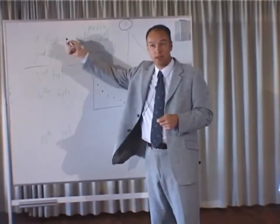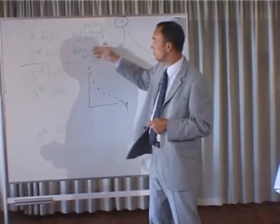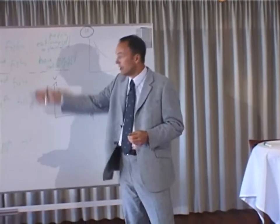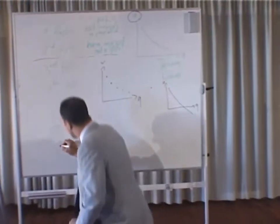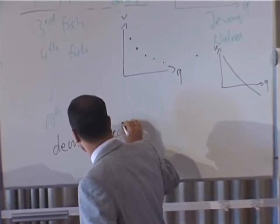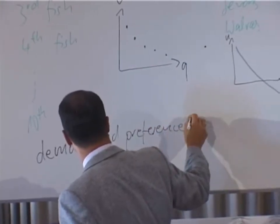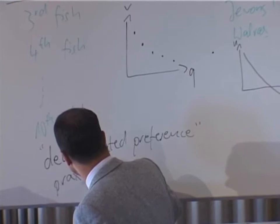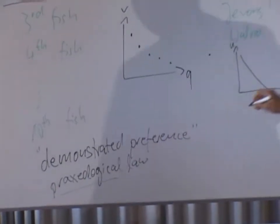The Austrian approach offers a praxeological account instead. Because goods can be subdivided into discrete units, every increase in quantity leads to satisfying a want less important than those already satisfied. The proof is the very fact of choosing: allocating fish first to eating myself and then to my wife proves through action that these are the most important uses — a demonstrated preference, as Rothbard called it. This is a praxeological law, not a psychological one.